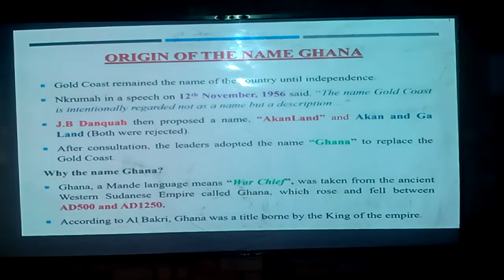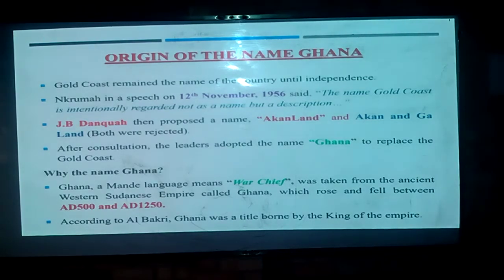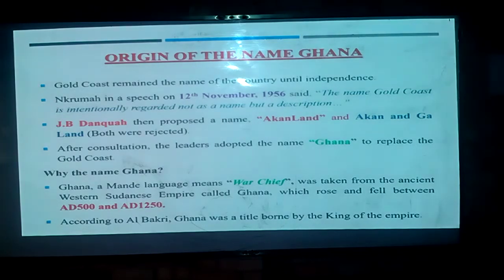These two names were both rejected on the same grounds that they were being tribalistic. The reason why J.B. Danquah might have given these names is because the Akan were the majority in terms of ethnic groups that lived, and even live today, in Ghana. Some may also say that because he himself was an Akan, he was only being tribalistic. So after various consultations, the leaders then adopted the name Ghana to replace the Gold Coast.